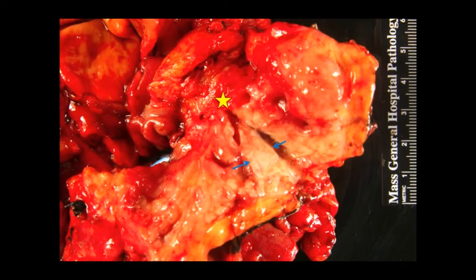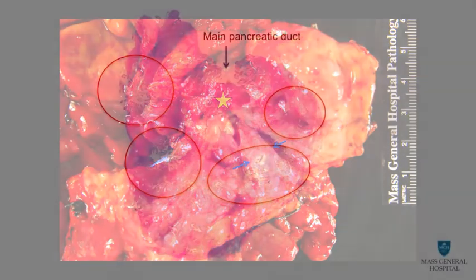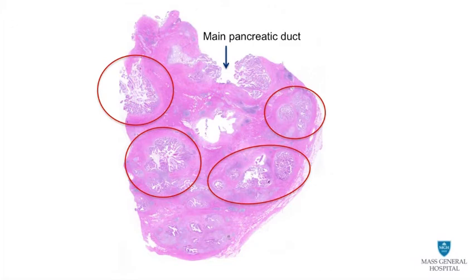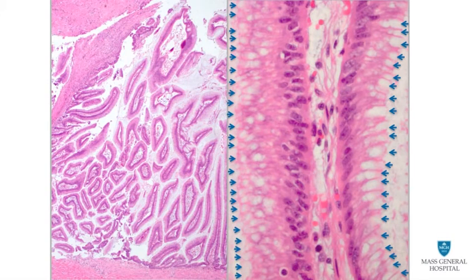Gross examination of the resected pancreas shows marked dilatation of the main pancreatic duct, marked by blue arrows, from the resection margin to the ampulla, marked by an asterisk. Typically, the pancreatic tissue showing gross abnormality is completely submitted for microscopic examination. A representative microscopic section shows that not only the main pancreatic duct but also many of its branches are dilated with papillary epithelial proliferation, indicated by red circles. Higher power magnification shows that the duct lining is replaced by villiform epithelial proliferation, with tall columnar cells with elongated nuclei with stratification and mucin in the apical aspect of the cytoplasm, marked by blue arrows.